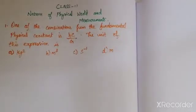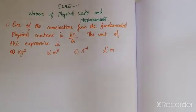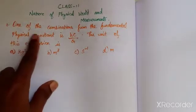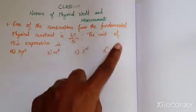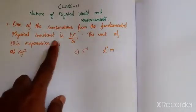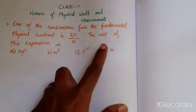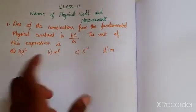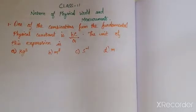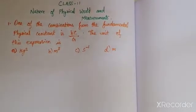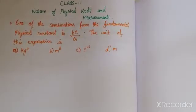Hi, welcome to Love Your Knowledge channel. This is Class 11 Physics, Unit 1 - Nature of Physical World and Measurements. We are looking at back exercise multiple choice questions. Question 1: one of the combinations from the fundamental physical constants is hc/g. We need to find the unit of this expression using the fundamental physical constants.